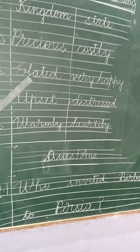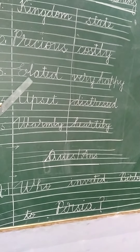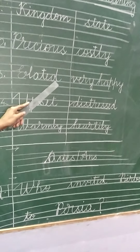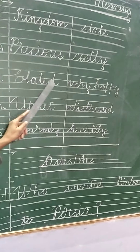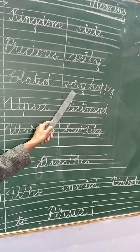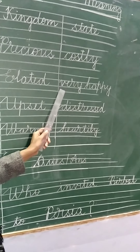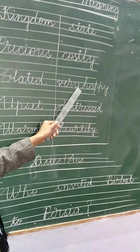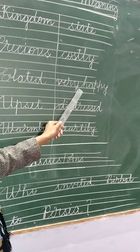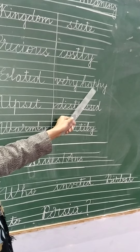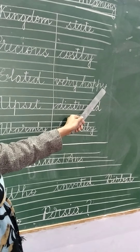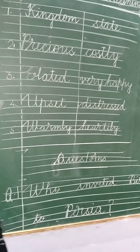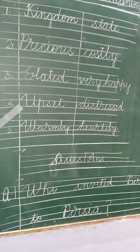Then number 3: elated — E-L-A-T-E-D. Elated. Elated means very happy, feeling of happiness. V-E-R-Y, very. H-A-P-P-Y, happy. Very happy.